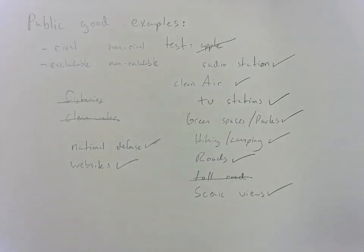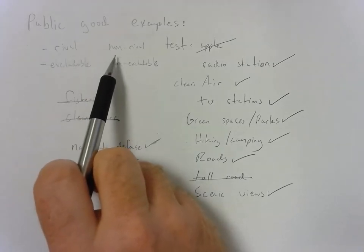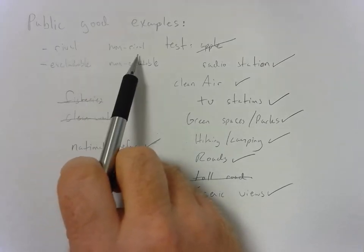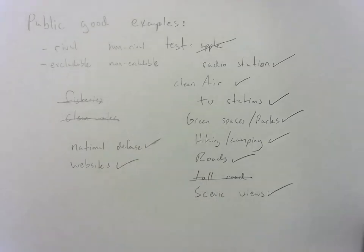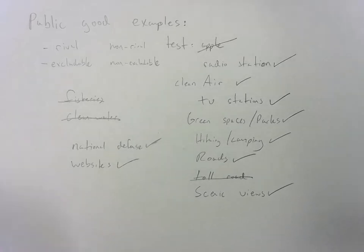So basically, you've just got to do the test for public goods. Is the resource or good itself non-rival? If the answer is yes, we're halfway there. Okay, is it non-excludable? And if it answers positive for both of those things, you've got a public good on your hands.